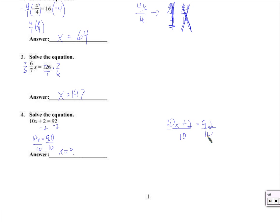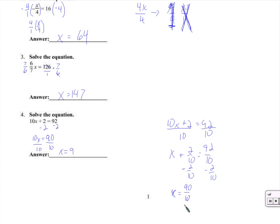Now if we did divide by 10 to start with, it would just be a mess. Let me show you. The reason you might divide by 10 first is because you don't realize all the extra work involved. You'd have 10x divided by 10 is x, plus 2 divided by 10 equals 92 divided by 10. My next step would be subtracting 2 tenths from both sides, needing a common denominator. So x equals 92 tenths minus 2 tenths — that's 90 tenths — and x equals 9. We get the same answer, of course, but it was more of a hassle. The cleaner way: subtract 2, divide by 10, done. x is 9.